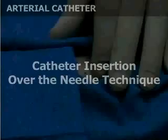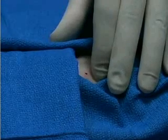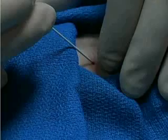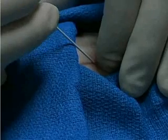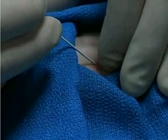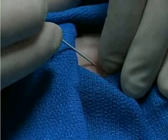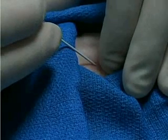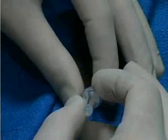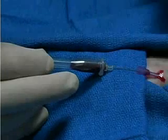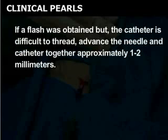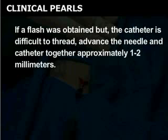Palpate the radial artery again to confirm the catheter placement site. Direct the needle tip with bevel facing upward into the radial artery. Insert the angiocath at a 30 to 45 degree angle to the skin. Advance the catheter slowly into the tissue, watching at all times for a flash of blood. Adjust the angle of the catheter. Holding the needle steady, gently push the catheter forward. If a flash was obtained but the catheter is difficult to thread, advance the needle and catheter together approximately 1 to 2 millimeters. The needle may be located in the artery while the catheter remains external to the vessel.